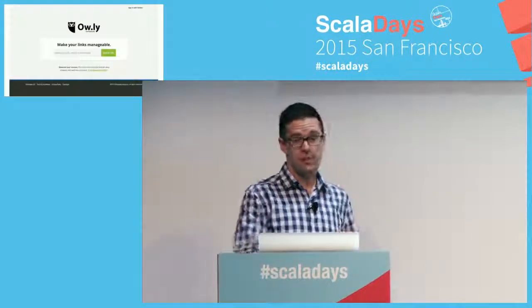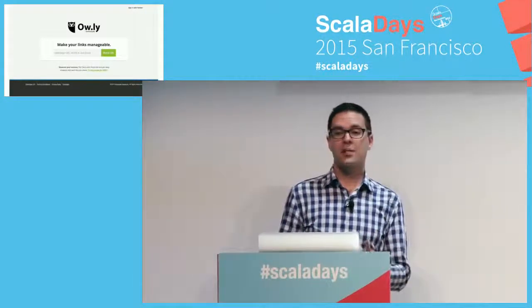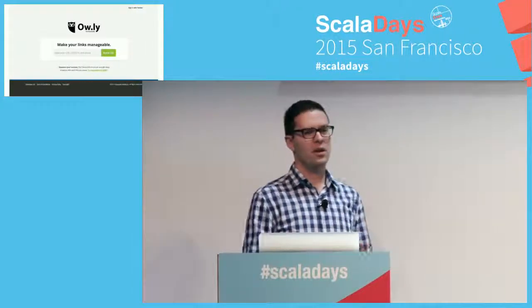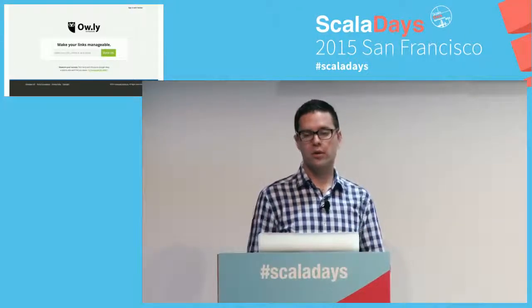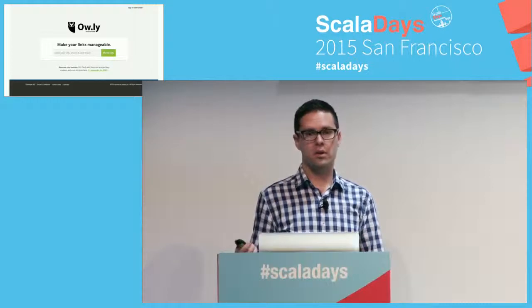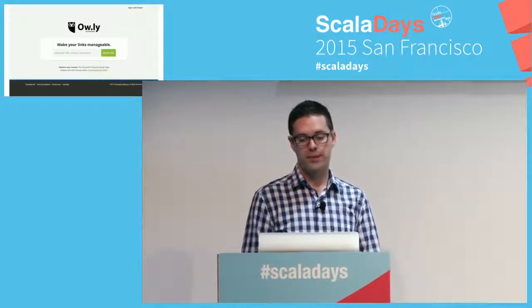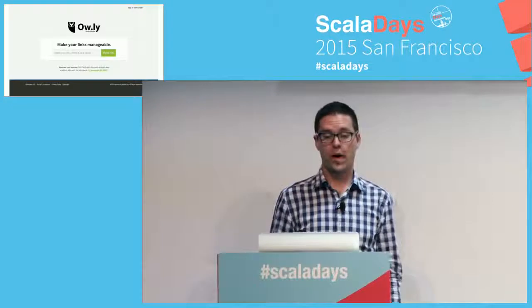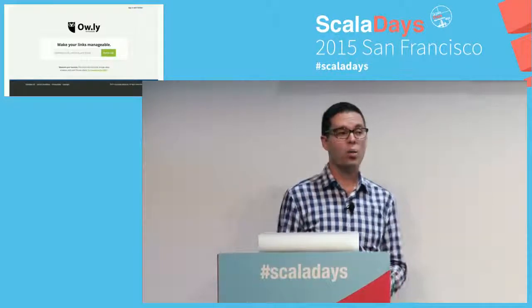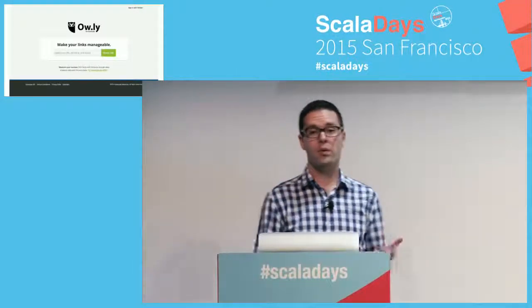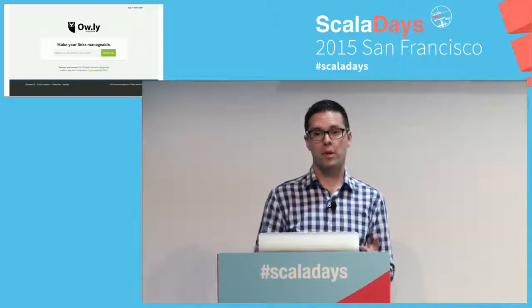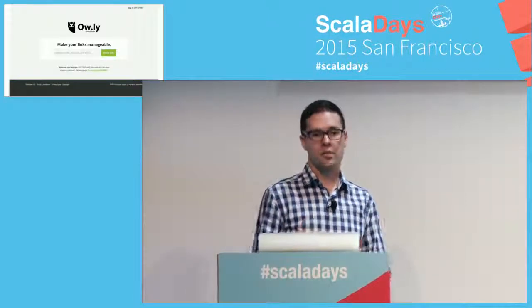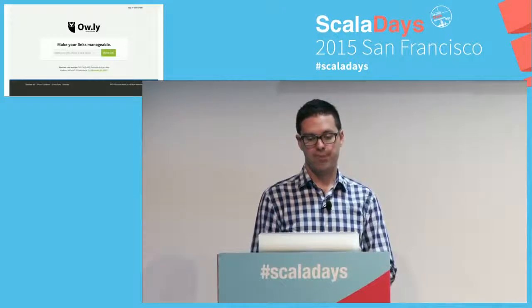It turned into this — the updated UI. The UI wasn't the major component of Owly; the API was the primary use. But I like to show this because it's visual and represents how we could change the UI and change the behavior now that it had been modernized.